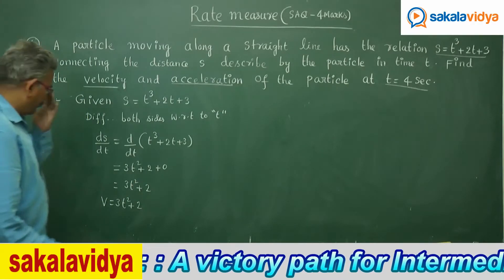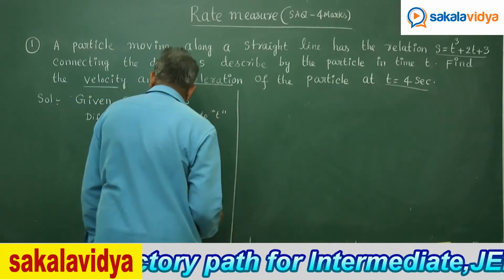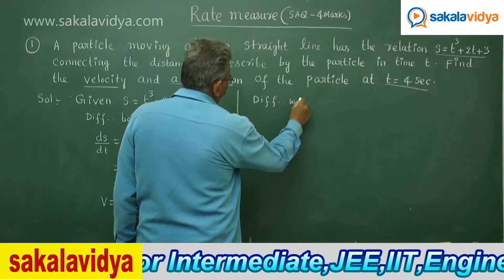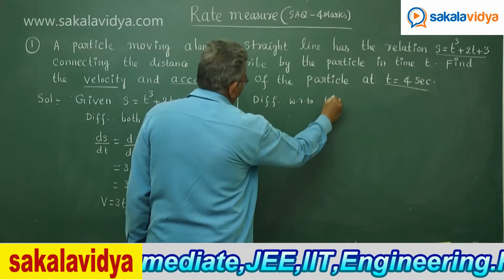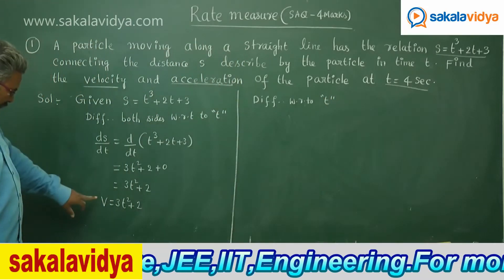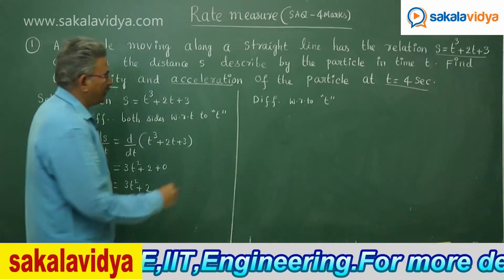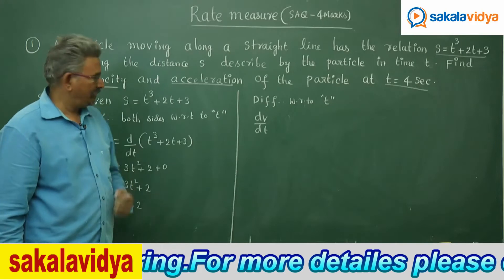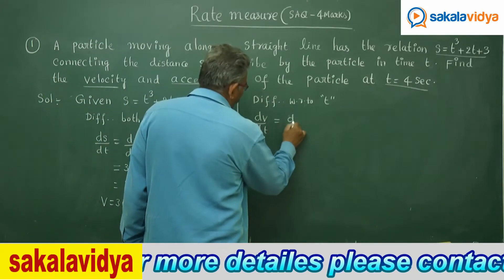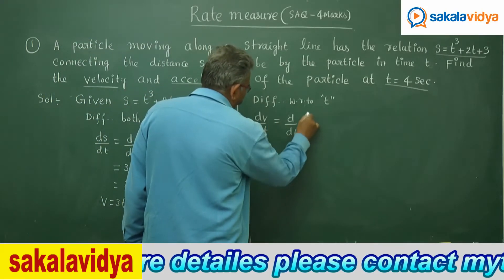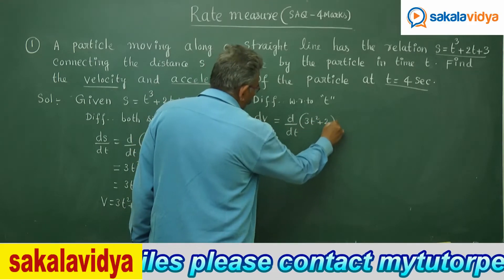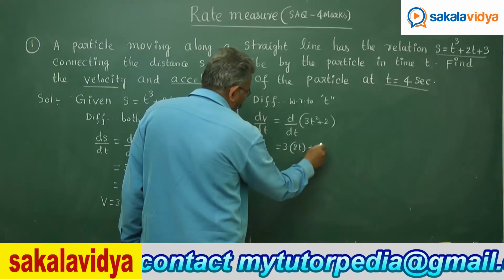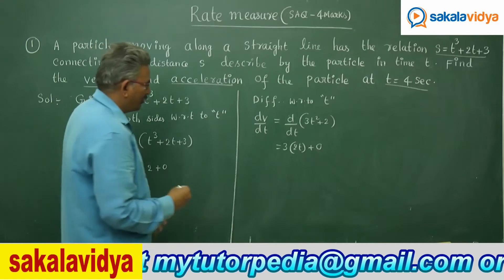Now again differentiate with respect to t. The derivative of v with respect to time is dv by dt, that is the rate of change of velocity. This equals d by dt of 3t squared plus 2. So 3 into derivative of t squared is 2t, giving 6t, and the derivative of constant 2 is 0. So dv by dt equals 6t.